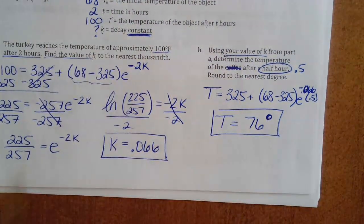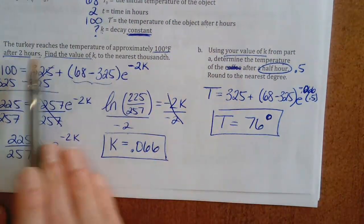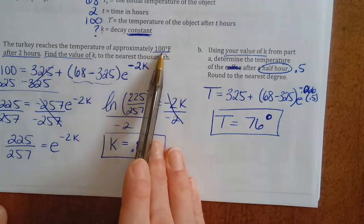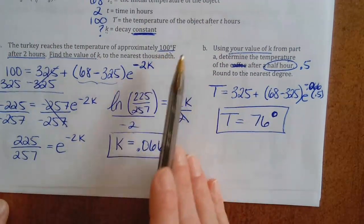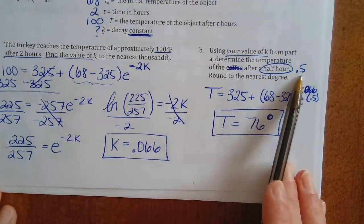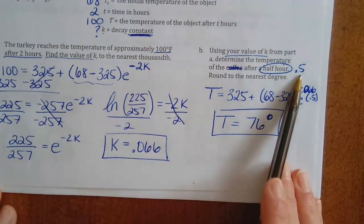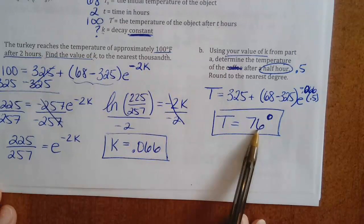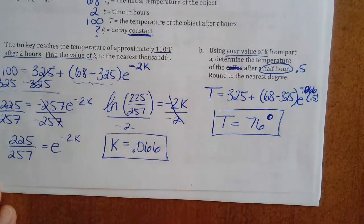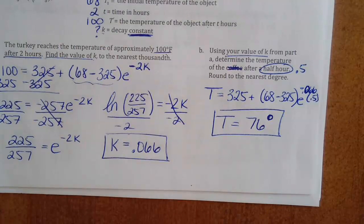The turkey only reaches about 76° after half an hour, which makes sense — in part A it was 100° after two full hours, so after only half an hour it should be less than 100°.